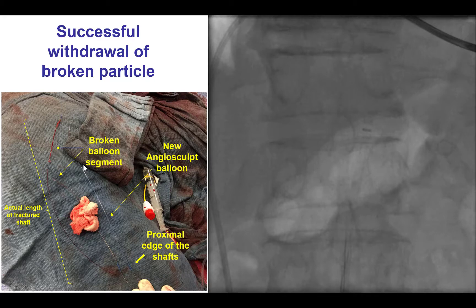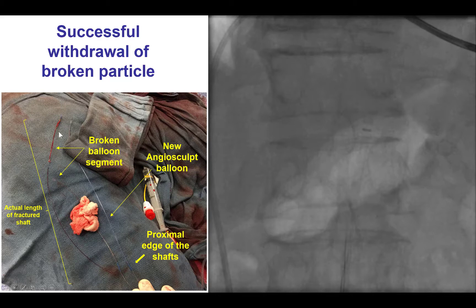When we compared a new angiosculpt balloon with the one that was fractured, we saw that the piece that came out was actually a very, very long piece. Although it was not supposed to be as long, matching the two balloon catheters revealed that the reason we had such a long length of the fractured balloon come out is that there was some overexpansion or discontinuity in the shaft of the angiosculpt balloon.